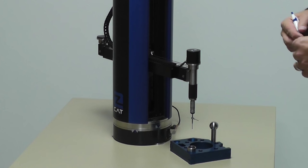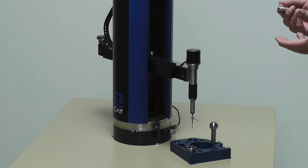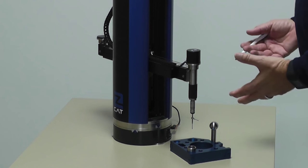Okay, so now we're going to actually start measuring with the Zcat. But the first thing we need to do is a simple alignment because the gauge out of the box and anytime you first turn it on is going to be in what I would call machine coordinates. We need to put it in part coordinates.